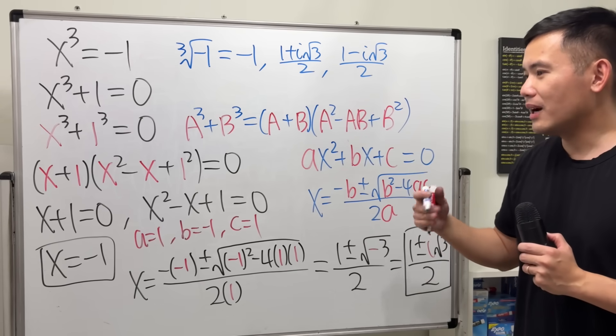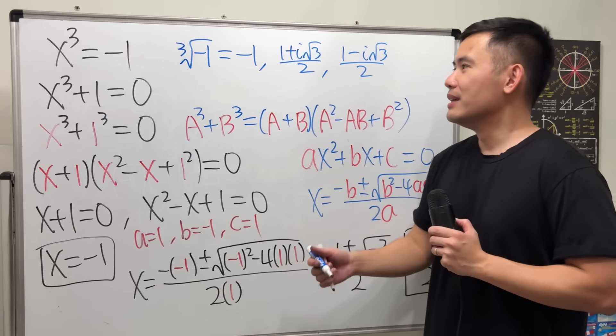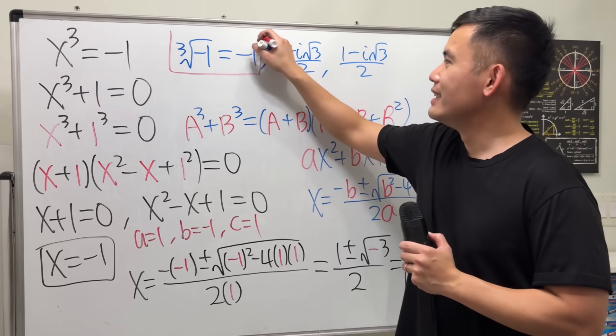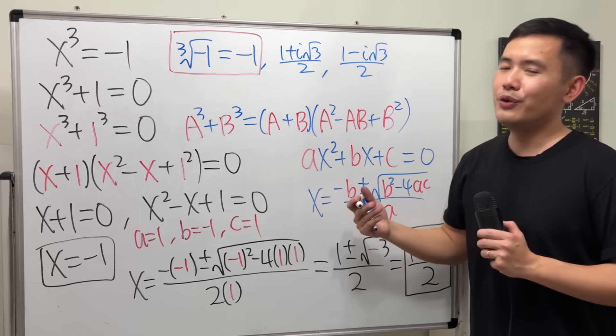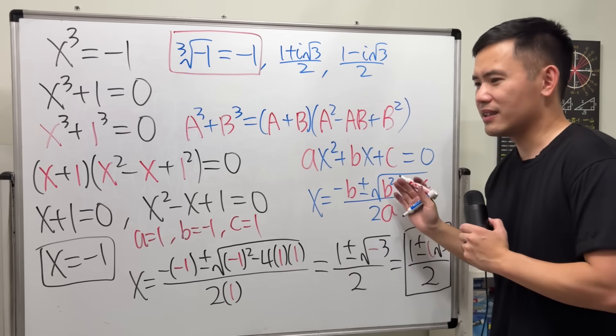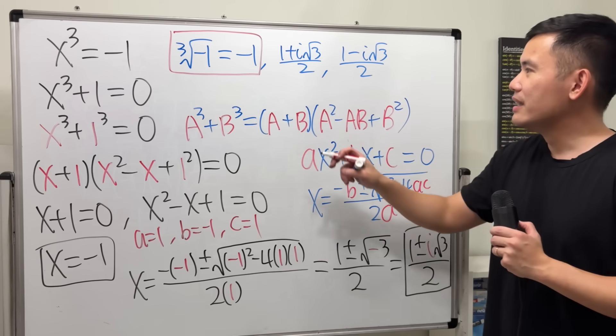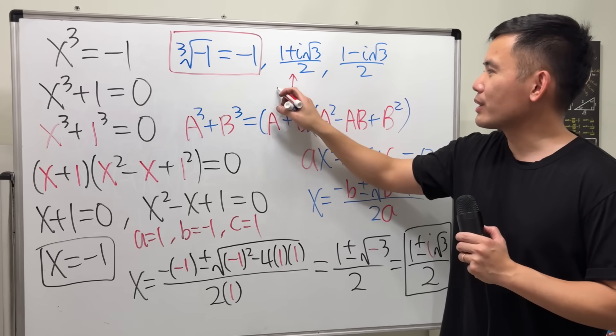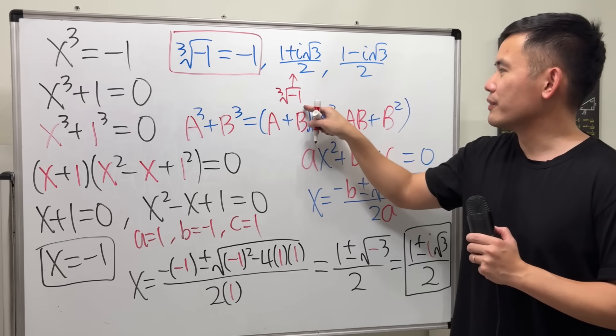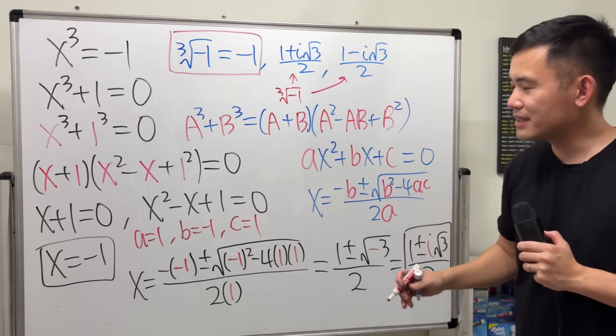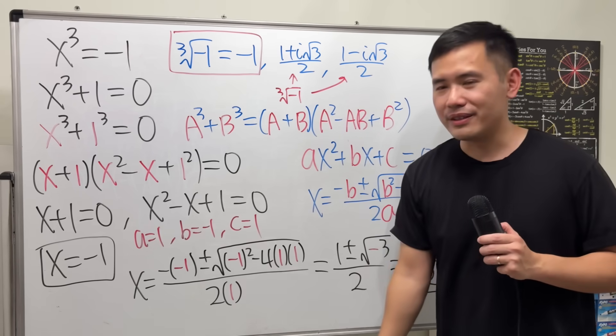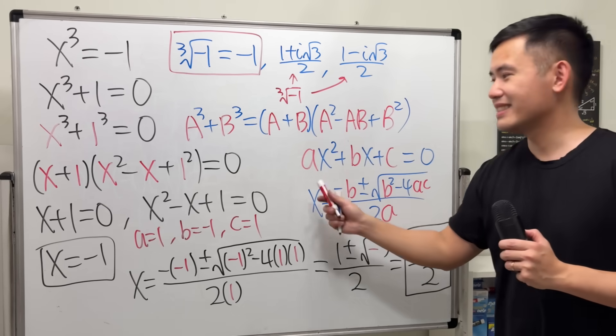However, though, it depends on which class that you are taking. Sometimes, just do this. However, if you are in a complex analysis, which is like an upper division math class, then it's perhaps okay to write it as cube root of negative 1 being this and then being that. But that will be way later. Anyways, that's it.